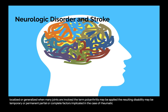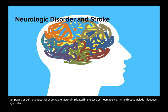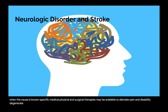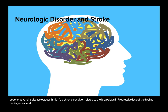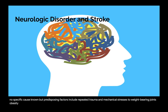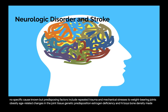Factors implicated in the cause of rheumatic and arthritic disease include infectious agents, traumatic disorders, endocrine abnormalities, tumors, allergies, drug reactions, and inherited or congenital conditions. Degenerative joint disease (osteoarthritis) is a chronic condition related to the breakdown and progressive loss of the hyaline cartilage cushion in the joints, with eventual changes in the underlying bone. Inflammation is not a key symptom. Predisposing factors include repeated trauma and mechanical stresses to weight-bearing joints, obesity, age-related changes in joint tissue, genetic predisposition, and estrogen deficiency.